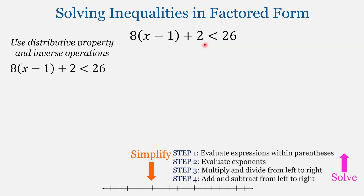First, we're going to simplify down this left side of the inequality. To simplify it down, we will use order of operations. The first step is to evaluate any expressions within the parentheses — we can't simplify further. Next is to evaluate exponents — there are none. Step three is to multiply and divide from left to right, and we do have this multiplication.